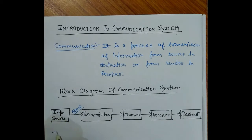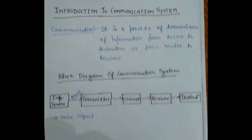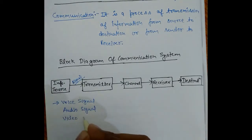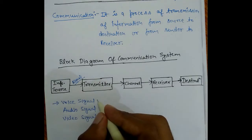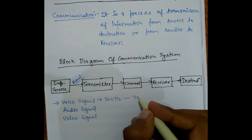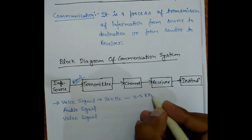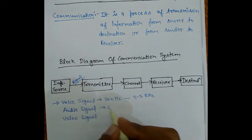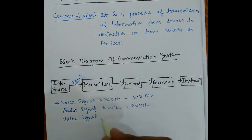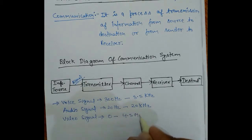The source generates our voice signal, audio signal, and video signal. The voice signal range is 300 Hz to 3.5 kHz, the audio signal range is 20 Hz to 20 kHz, and the video signal range can be 0 to 4.5 MHz.